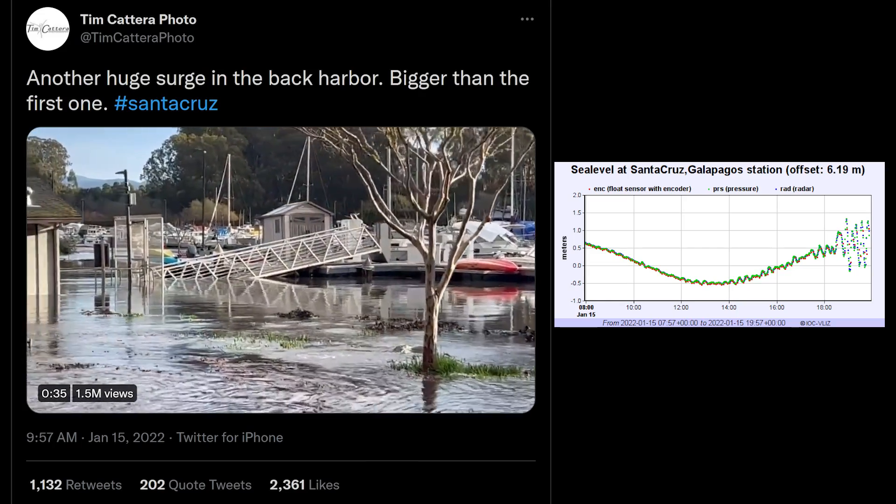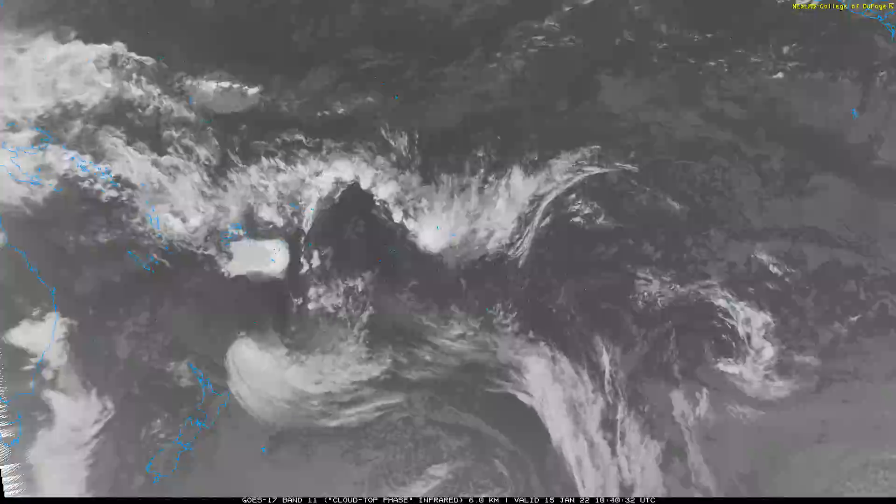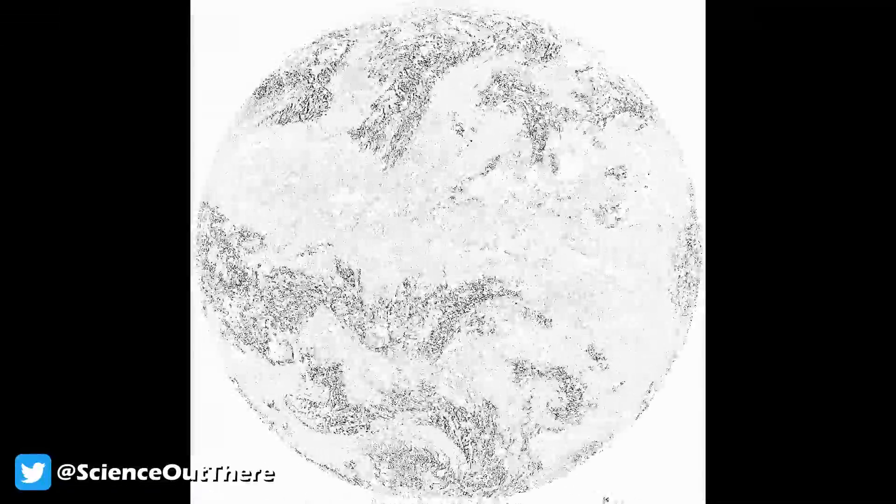However, the shock wave is really subtle on satellite images, so I've done something to make it much clearer to see. Initially, I posted this to Twitter, but Twitter's compression ruined it and I've gotten lots of questions about what I did. So here goes.